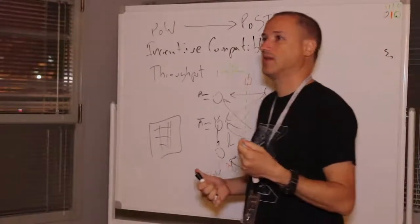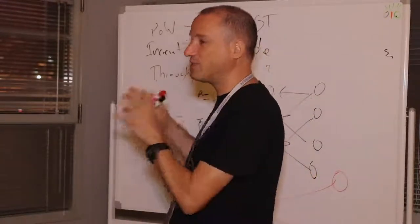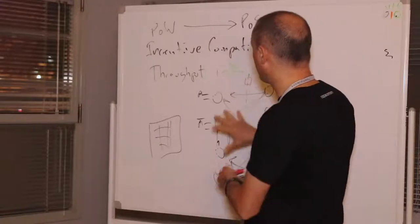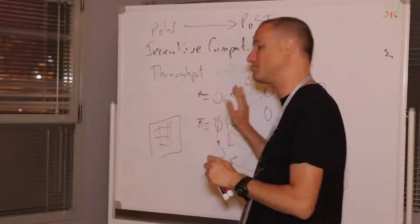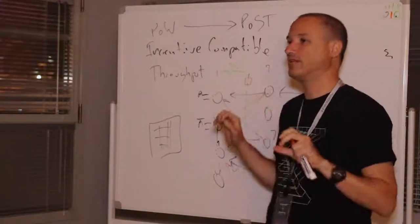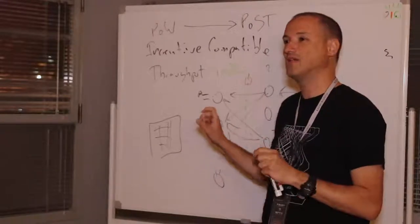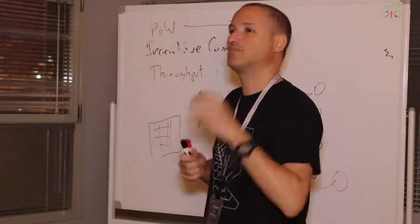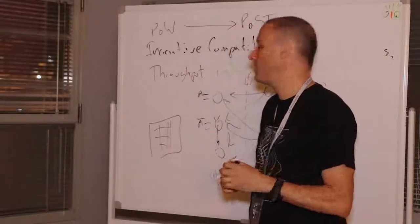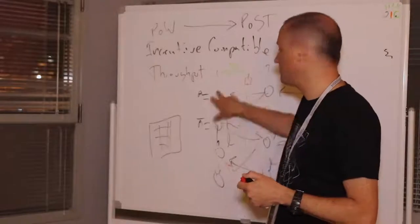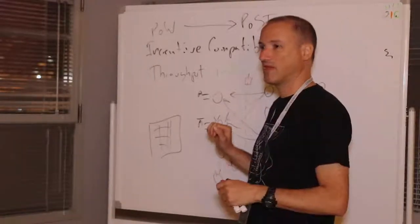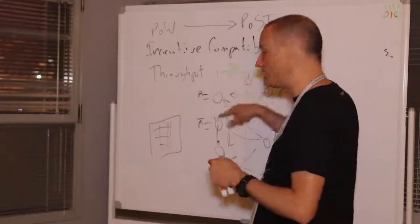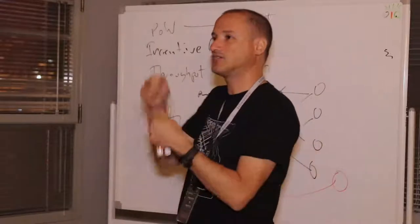What we actually do is use a separate BFT protocol — a Byzantine agreement protocol — which we call the Tortoise. This guarantees irreversibility and has other nice properties. On top of that, after every layer is published, we run a second protocol called the Hare protocol — also a Byzantine agreement protocol — where all nodes decide which of these blocks should be in the layer. It runs ideally before the next layer starts, so by the next layer everybody knows which blocks are in and which are out.